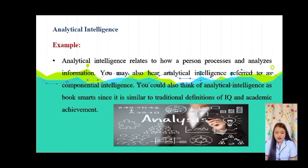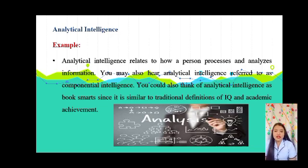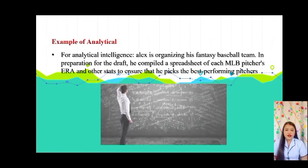Analytical intelligence relates to how a person processes and analyzes information. You may also hear it referred to as componential intelligence. You could think of analytical intelligence as book smart, since it's similar to the traditional definition of IQ and academic achievement. For analytical intelligence, consider Alex, who is organizing his fantasy baseball team in preparation for the draft. He compiled a spreadsheet of each MLB pitcher's ERA and other stats to ensure that he picks the best performing pitchers.